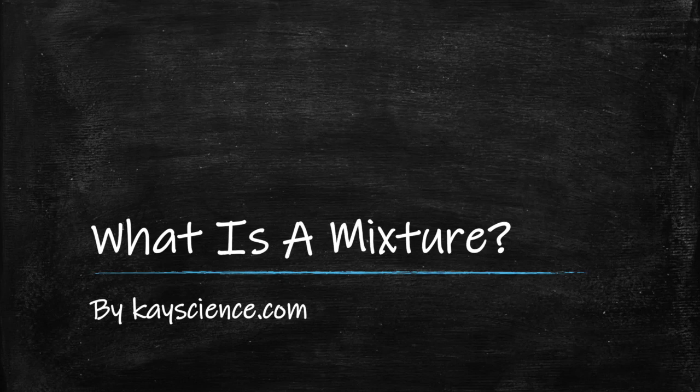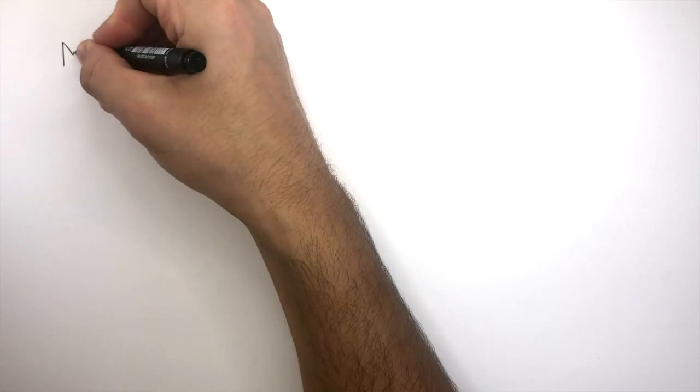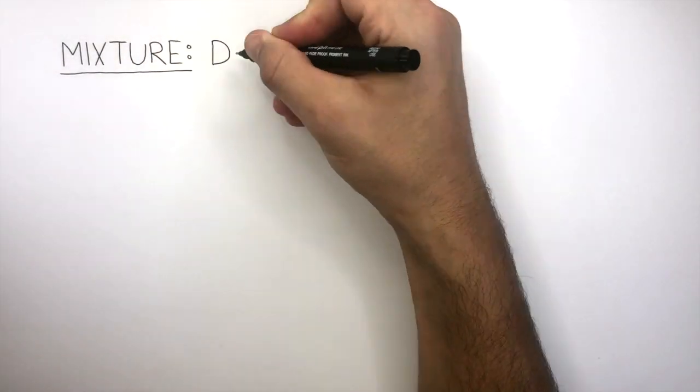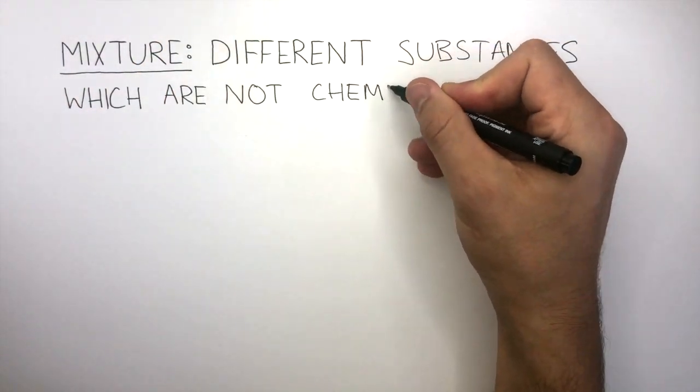What is a mixture? By kscience.com. A mixture is made up of different substances which are not chemically combined.